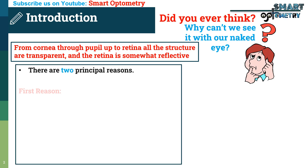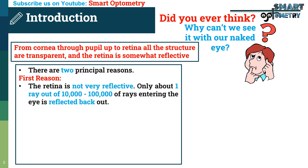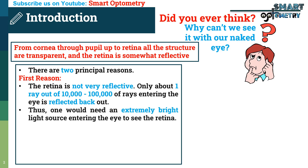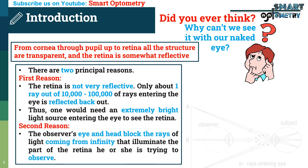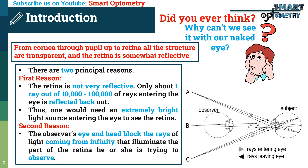There are two reasons why we can't see the retina with the naked eye. First reason: the retina is not very reflective. Only about one ray out of 10,000 or one lakh of rays entering the eye is reflected back out. Thus, one would need an extremely bright light source entering the eye to see the retina. Second reason: the observer's eye and head block the rays of light coming from infinity that illuminate the part of the retina he or she is trying to observe.